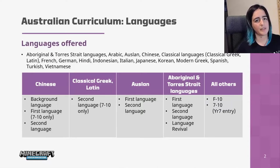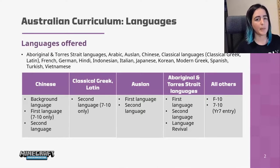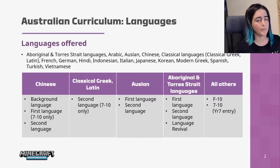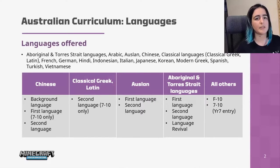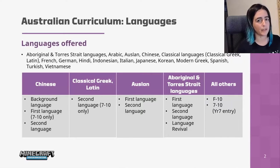Some of the languages have alternatives to this depending on a student's exposure to the language at home. For Chinese, Auslan, and Aboriginal and Torres Strait Islander languages, there are different sequences of learning for students for whom that is their first language.